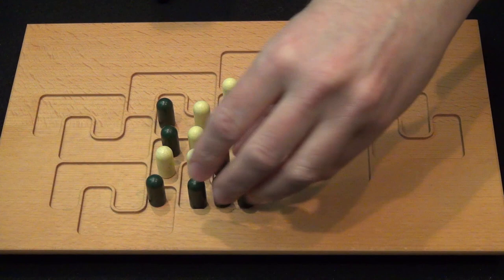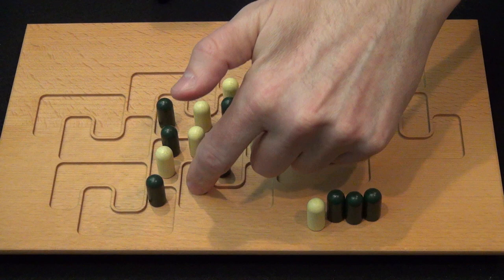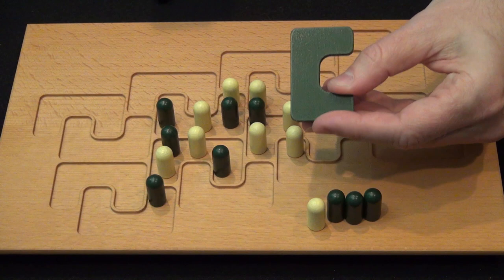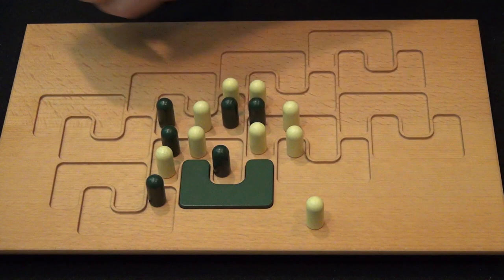When you place three pieces of the same color in an area, that area becomes permanently claimed by that player. All the pieces are removed from that space, and a C-shaped space for the C-cross is now placed on the board, and this becomes permanent.